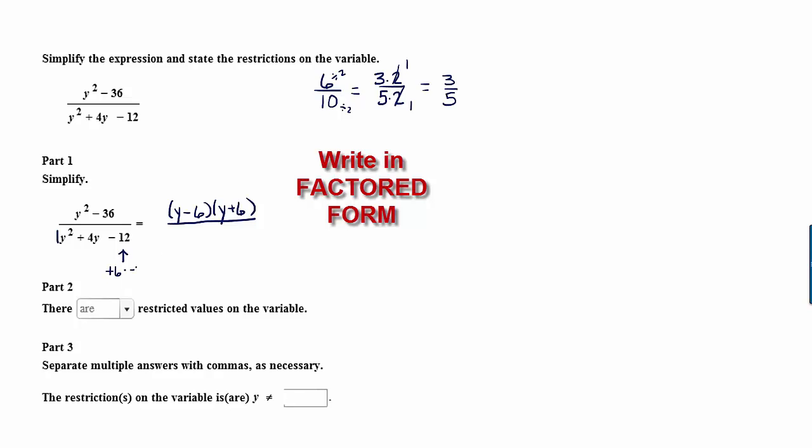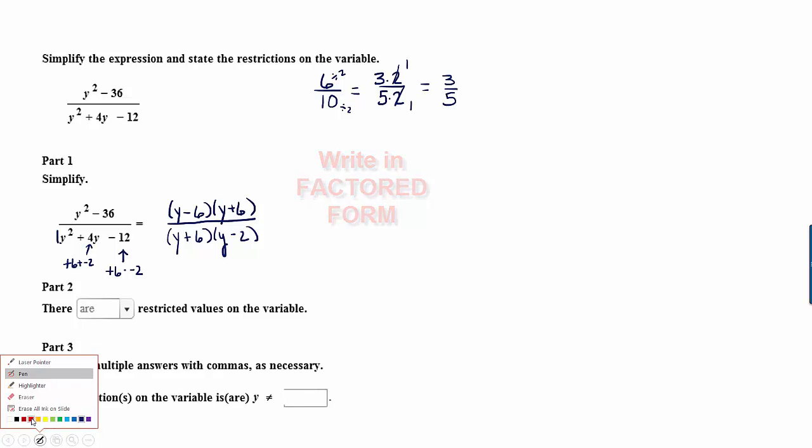Positive 6 times negative 2 gives us negative 12, and positive 6 plus negative 2 adds up to positive 4. This tells us that if we multiplied y plus 6 times y minus 2 by foiling this out, we would get y squared plus 4y minus 12. This is the factored form of the rational expression, and we can see that we do have a common factor.